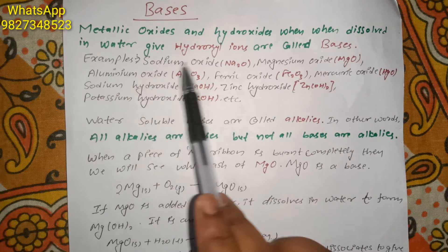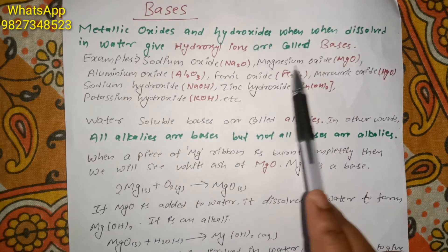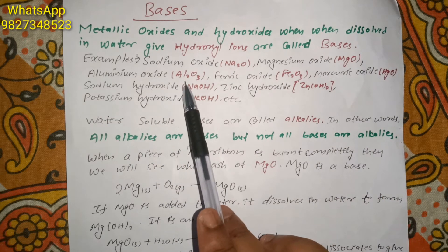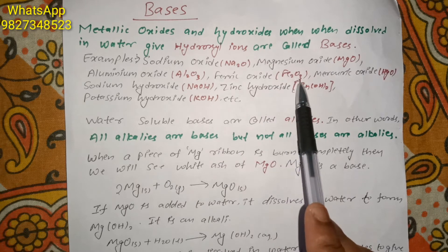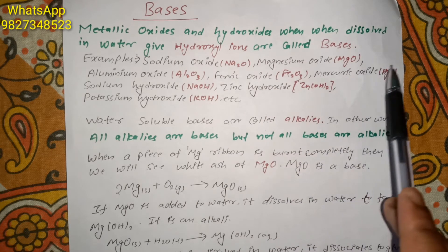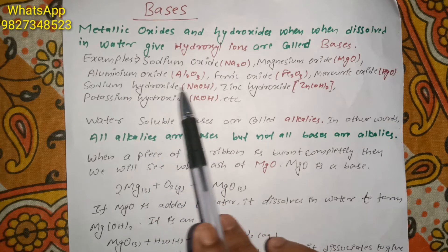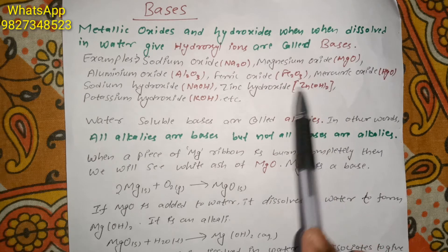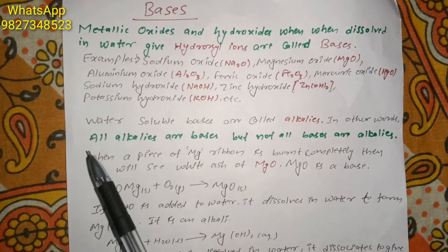Some examples of bases are: sodium oxide (Na2O), magnesium oxide (MgO), aluminium oxide (Al2O3), ferric oxide (Fe2O3), mercuric oxide (HgO), potassium hydroxide (KOH), sodium hydroxide (NaOH), zinc hydroxide (Zn(OH)2), and there are many more bases apart from these. You can write any example.